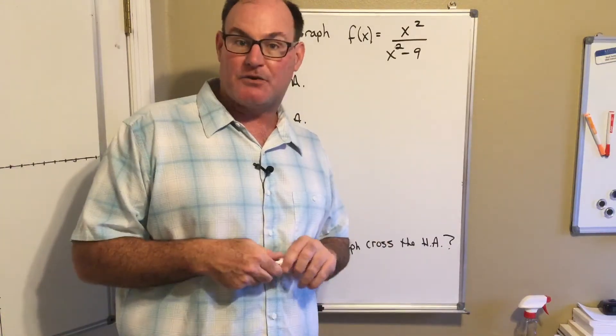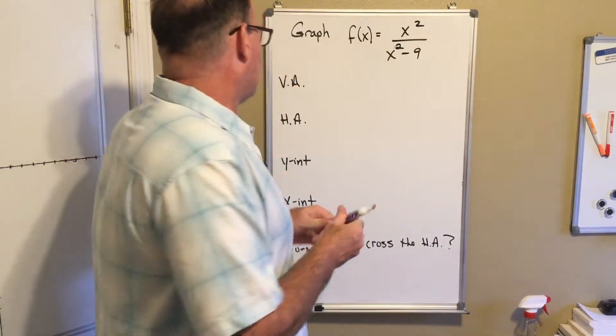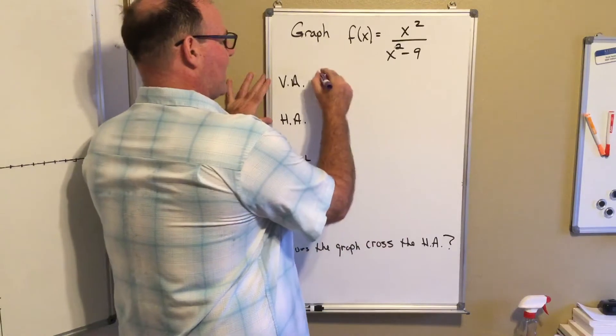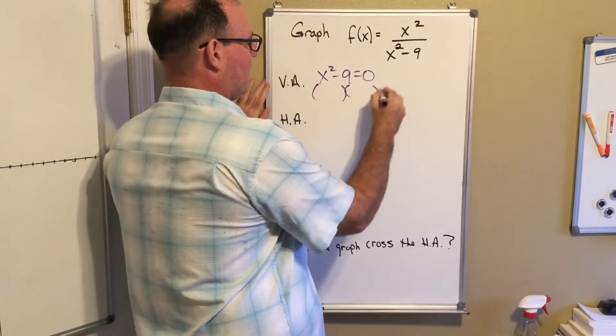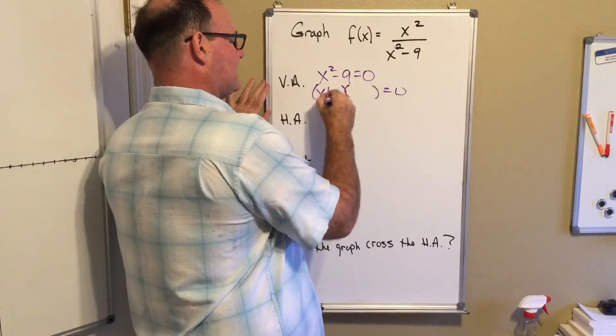So here goes. Vertical asymptotes happen when the denominator equals zero. I've given us a nice difference of squares on this problem. x squared minus 9 is x plus 3 times x minus 3.